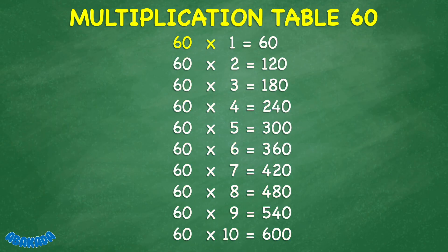60 times 1 equals 60. 60 times 2 equals 120. 60 times 3 equals 180. 60 times 4 equals 240. 60 times 5 equals 300.